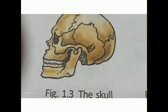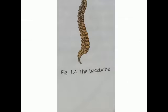Next is the backbone or spine. The skull is attached to the backbone, which forms the main axis of the skeleton. It is made up of 33 small bones called vertebrae, which form a strong column called the vertebral column. Underline these lines. The vertebral column protects the delicate spinal cord.